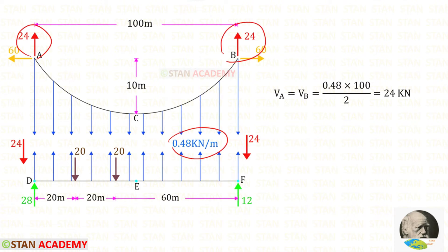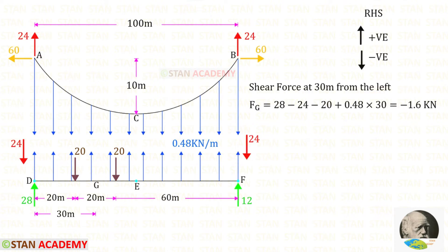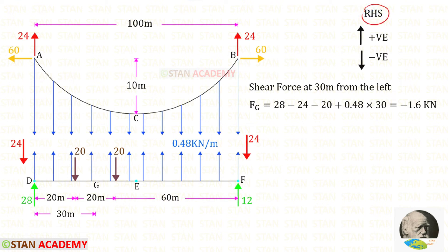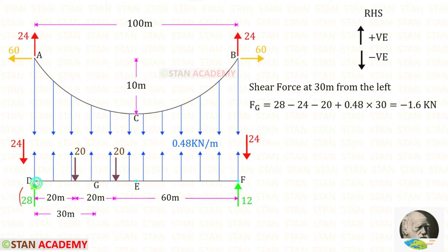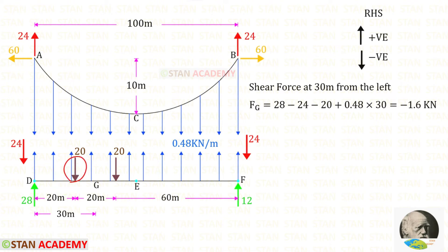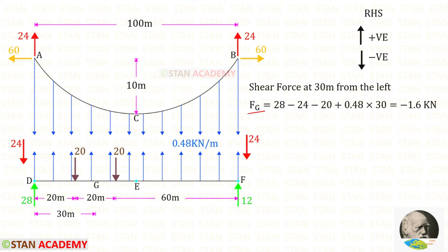Because of this uniformly distributed load, the reactions in the cable will be acting upwards, and in the girder they will be acting downwards. Now let us find the shear force at 30 meter from the left side. We have to use the right hand side formula: upwards positive and downwards negative. At 30 meter from the left side let us mark a point G. We have to only consider the stiffening girder. This reaction is acting upwards so it is positive. This reaction is acting downwards so it is negative. This load is acting downwards so it is also negative. The uniformly distributed load is acting upwards so it is positive, and the distance is 30. Finally for the shear force at point G we will get minus 1.6 kN.